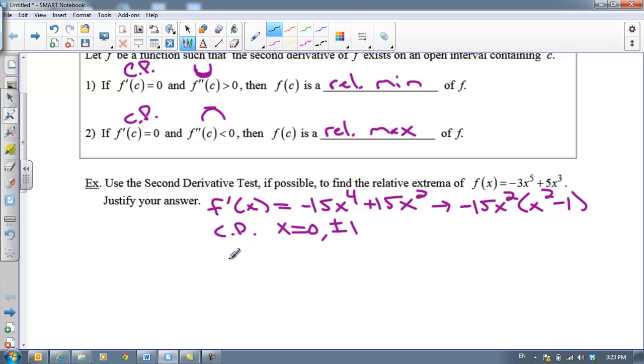Now the second derivative test says find the second derivative, which is not too bad. I just have two terms, a binomial here. I'm going to take the derivative again and I'm going to get negative 60 x cubed plus 30 x.